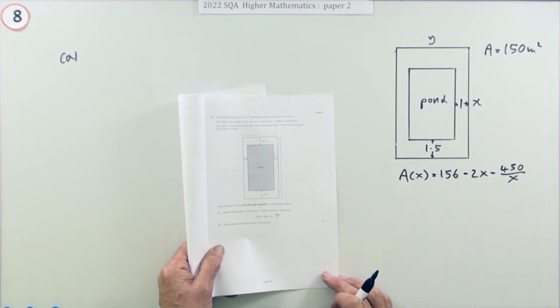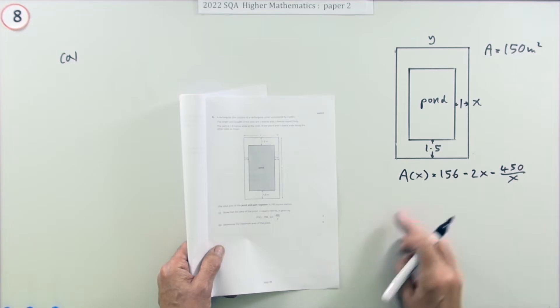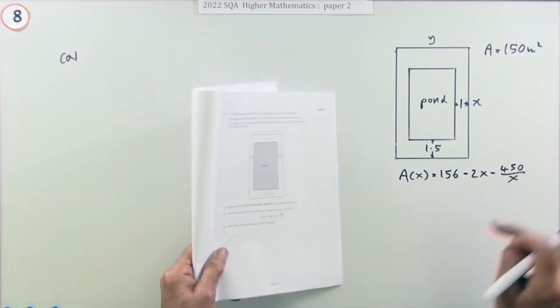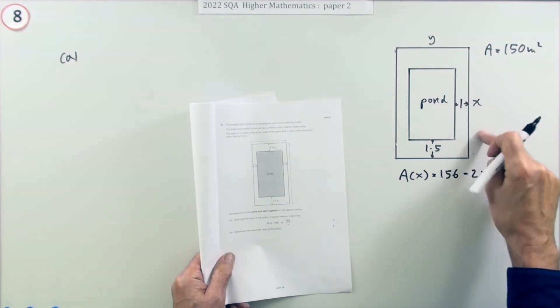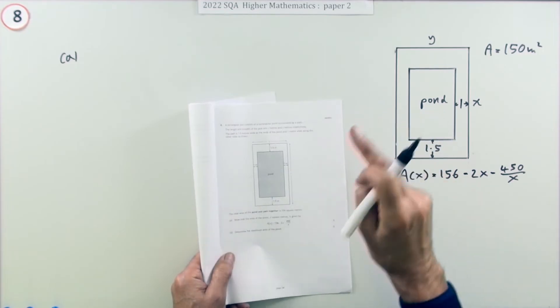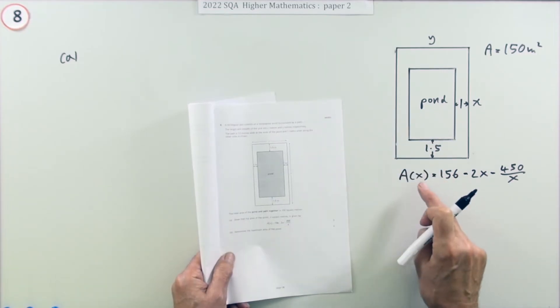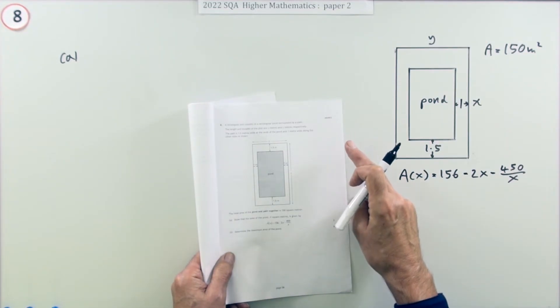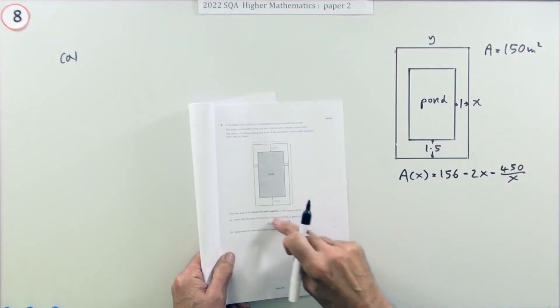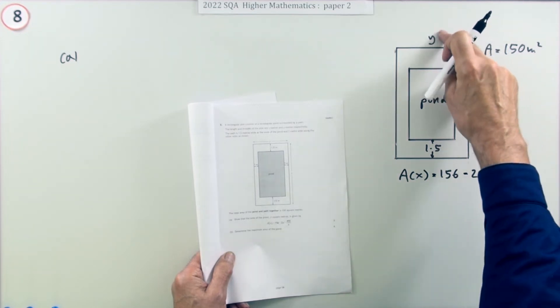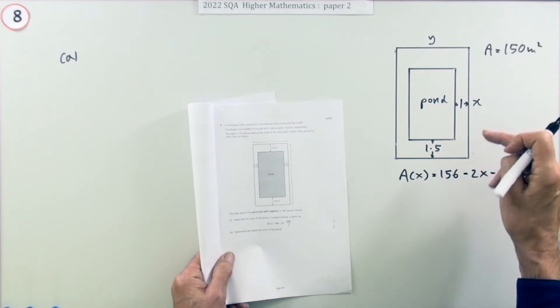How do you find this expression for three marks? It tells you the dimensions of the pond: x and y, and the path is one meter and 1.5 meters. But significantly, it has to tell you something else, because notice A(x) only mentions one variable, there's no y's in this. You need some other bit of information that connects y and x, and that's what the 150 is for.